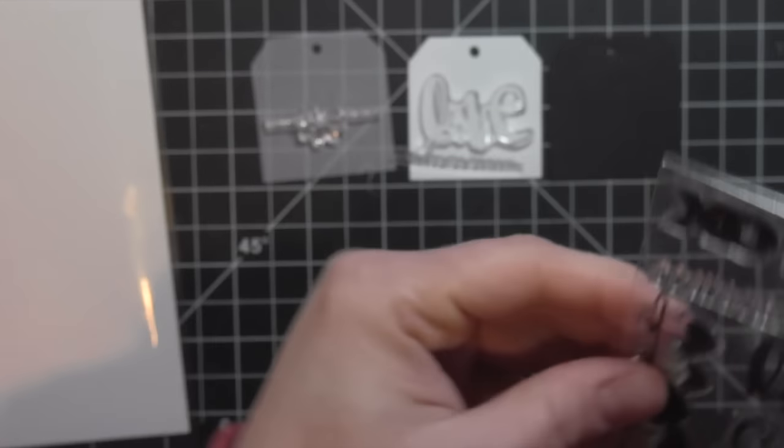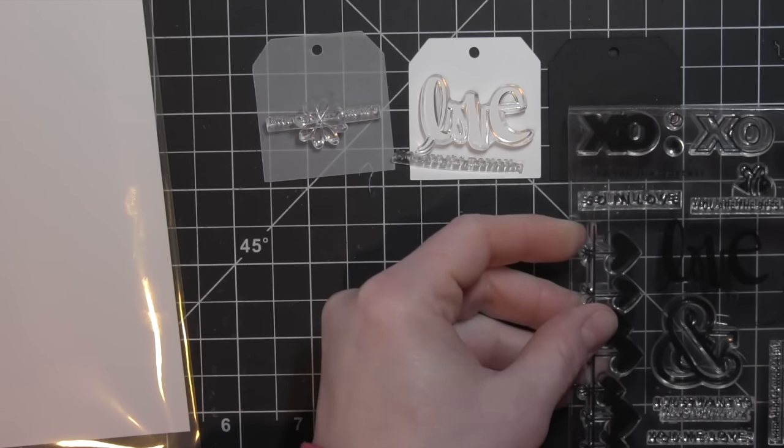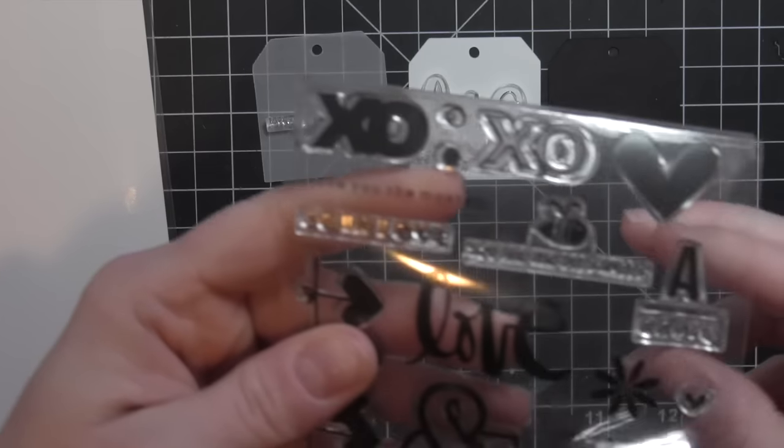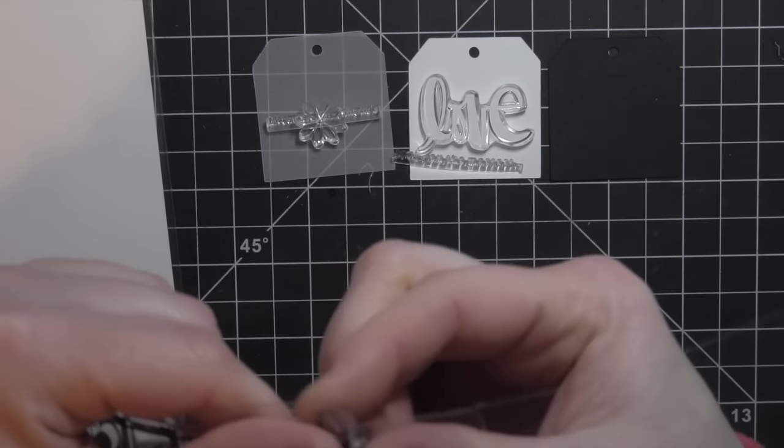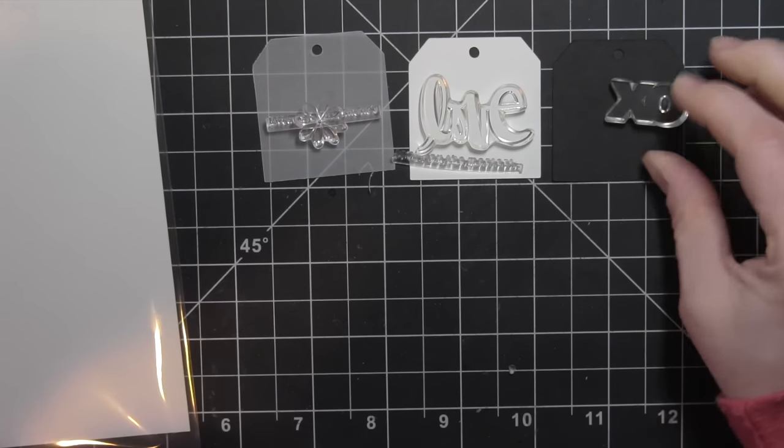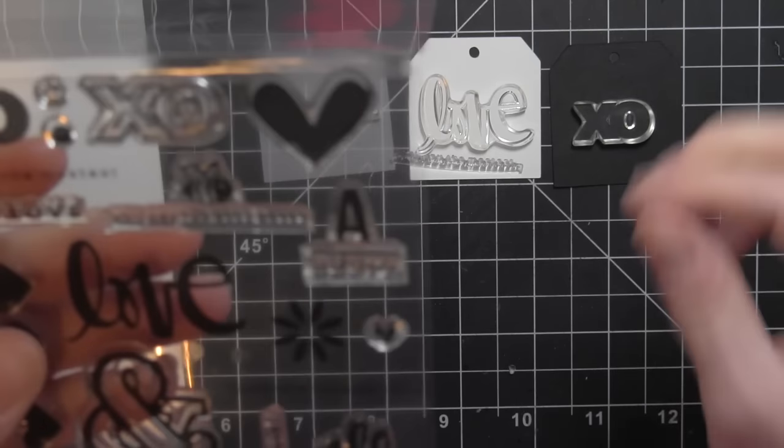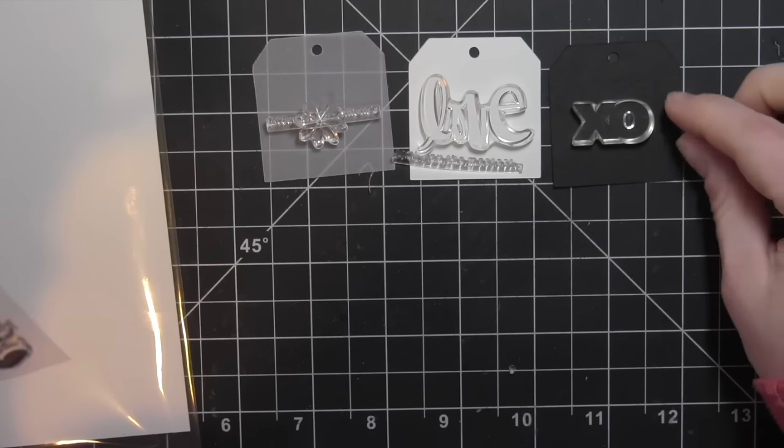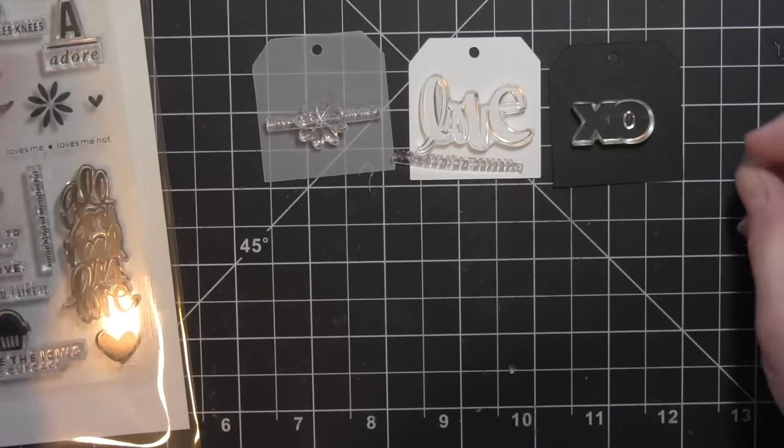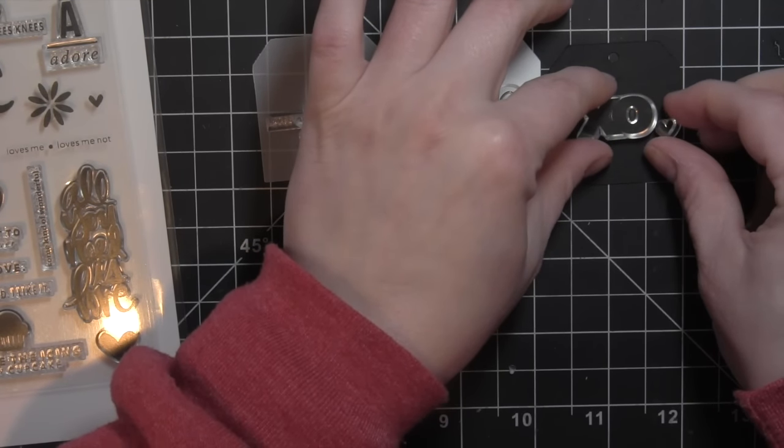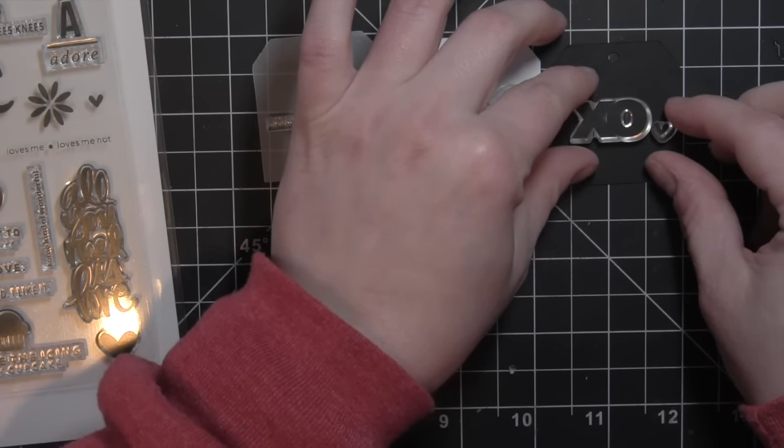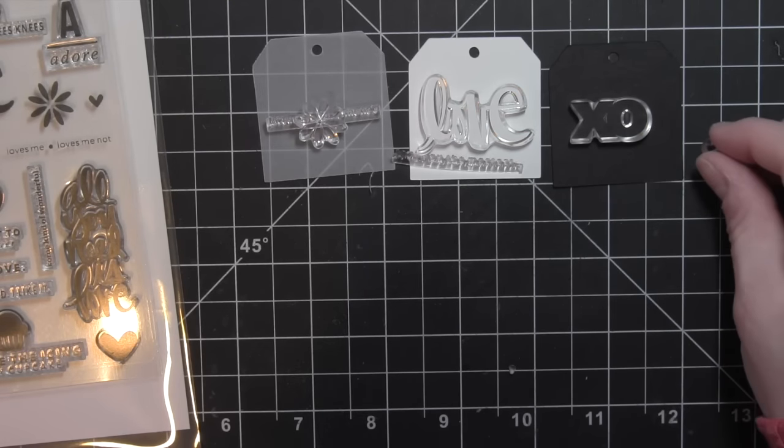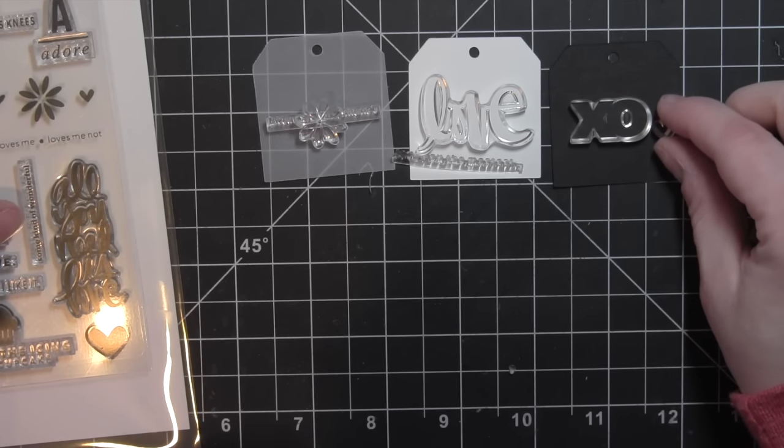Trying to decide what all stamps I want to use here. I'm going to use the large scripty word love with a smaller phrase underneath. That's one of my favorite ways of using these together, is to use a large scripty word with a smaller phrase. And then I'm going to take the XO and a little heart and another little phrase for my last tag.